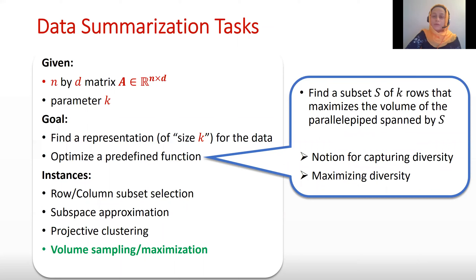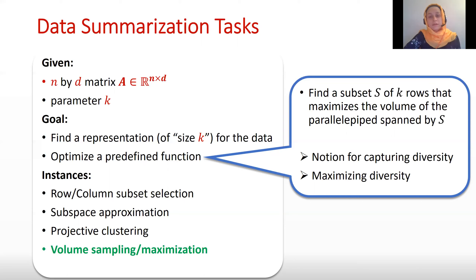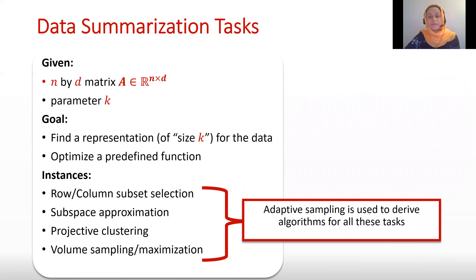For volume maximization, we would like to pick a subset of rows of size k that maximizes the volume, because it is one way to capture the notion of diversity — the more diverse the points are, the more volume they have. The goal is to pick a small subset of the data so that the diversity of the data is maximized or preserved. Adaptive sampling has been used to derive approximation algorithms for all of these tasks.